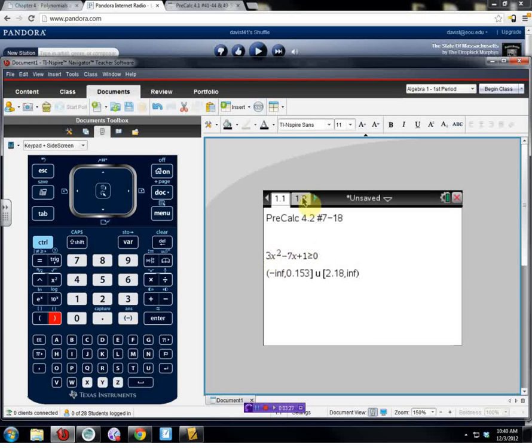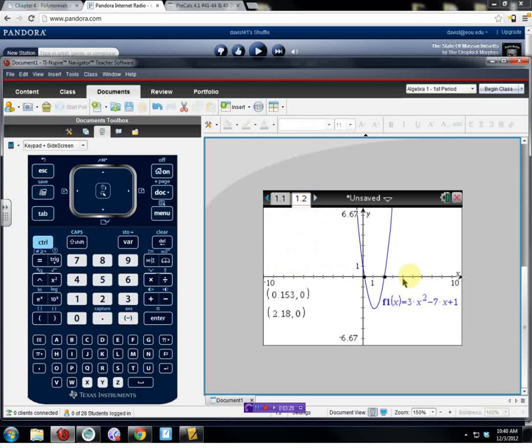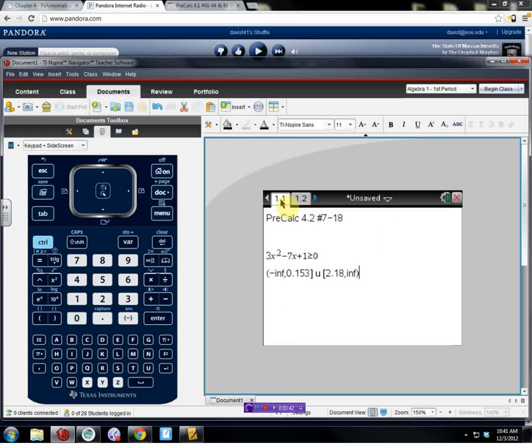So to recap, we graphed, we found the 0s, and then we interpreted the inequality sign, and we knew that both parts were above the graph. Okay? That's problems 7 through 18.